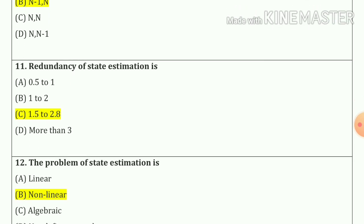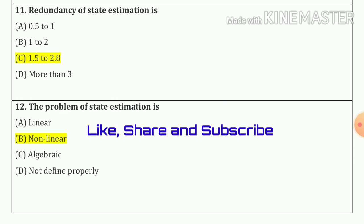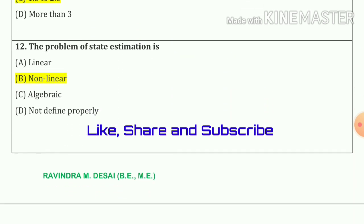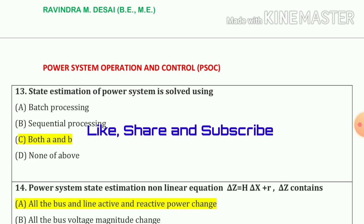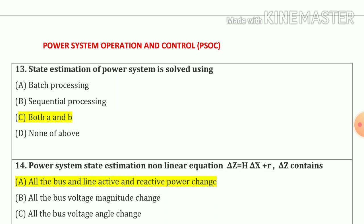Question number 11: Redundancy of state estimation is 1.5 to 2.8. Our answer is option number c. Question number 12: The problem of state estimation is non-linear. Option number b. Question number 13: State estimation of power system is solved using both a and b. That means our answer is option number c.